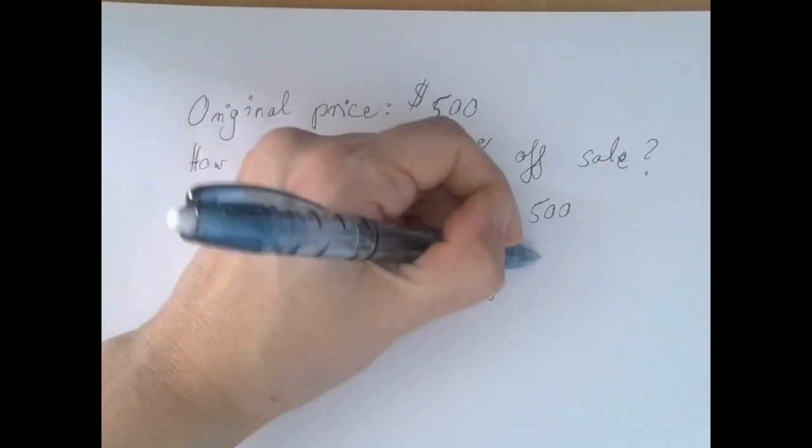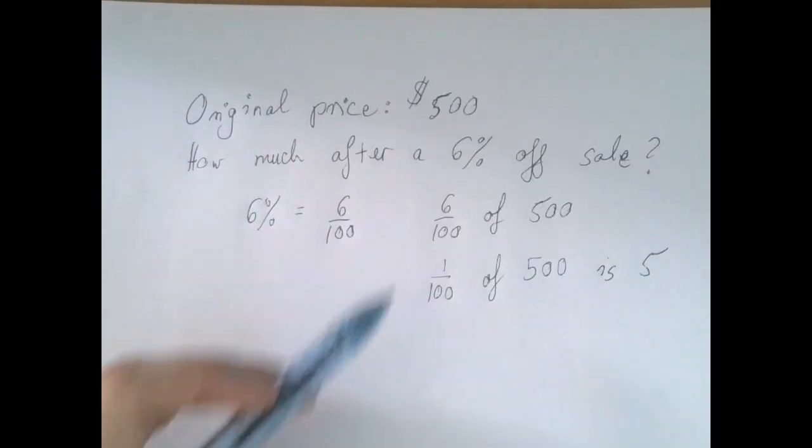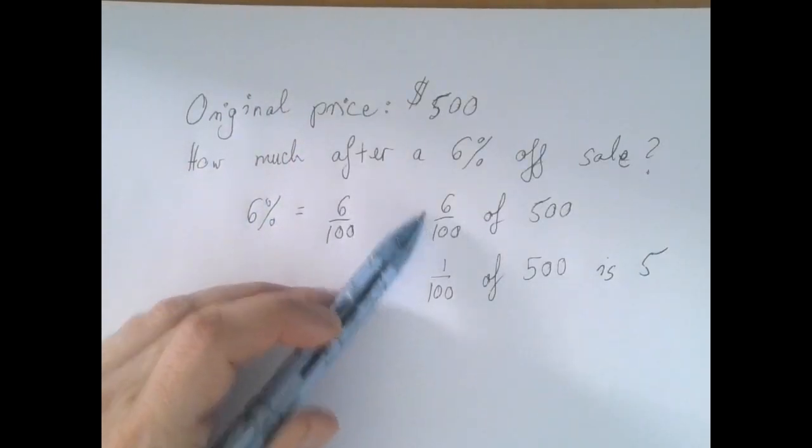1 hundredth of 500 is 5, and therefore 6 hundredths is 6 times that 5, that's 6 times 5, that's 30.